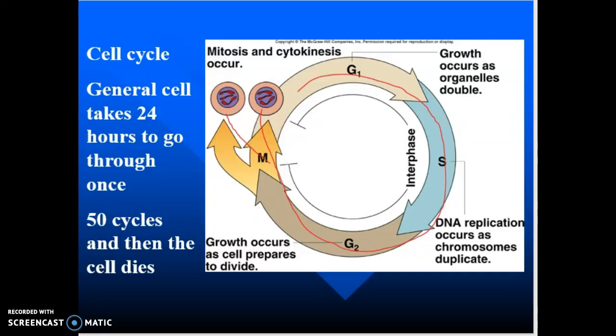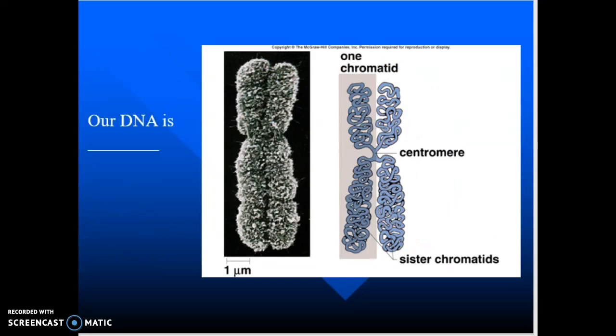The goal is that every time a cell goes through the cycle it produces an identical copy of itself. When a muscle cell goes through the cycle there are two muscle cells at the end; skin cells produce two skin cells; hair cells produce two hair cells. We're going to look at how a cell goes through the cycle and what the normal process is, then we'll talk about what happens when things go bad — that's what we call cancer. Our DNA is sitting inside the nucleus.